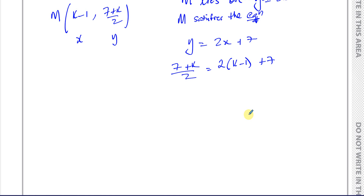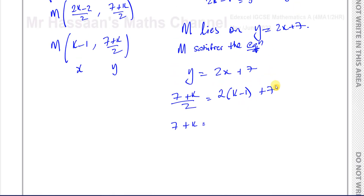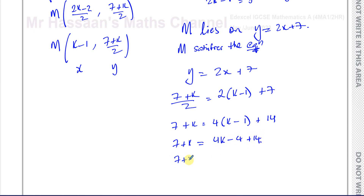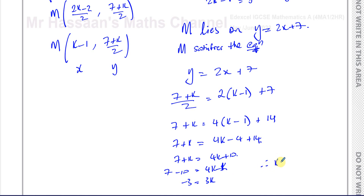Now we can work out what K is. Let's get rid of the fraction first by multiplying through. 7 plus K equals 4(K minus 1) plus 14, which gives 7 plus K equals 4K minus 4 plus 14, so 7 plus K equals 4K plus 10. Subtracting K from both sides and subtracting 10 from both sides, I'm left with negative 3 equals 3K. Therefore K equals negative 1.